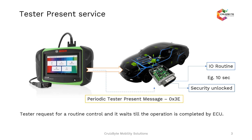This is an example of why the Tester Present Service is required. For example, a Diagnostic Tester sends a request for IORoutineControl. When this is requested, the ECU might take 10 or 20 seconds to complete the IORoutine. During this time period, you need to keep the communication alive between the Tester and the ECU, so a Periodic Tester Present Message is normally sent.